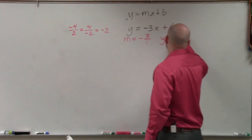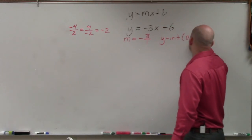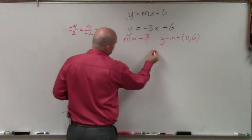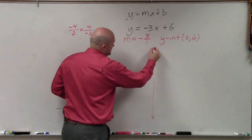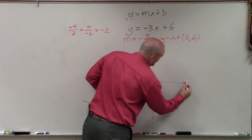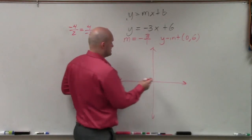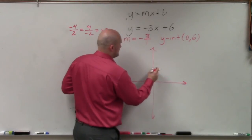And the y-intercept is the coordinate point 0 comma 6. So when you're going to go ahead and graph this, we create an x and a y-axis that I did not create for you. And then we simply plot the point 0 comma 6: 1, 2, 3, 4, 5, 6.